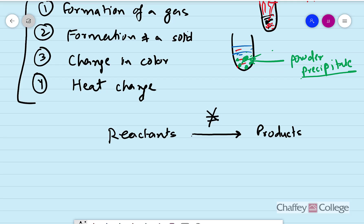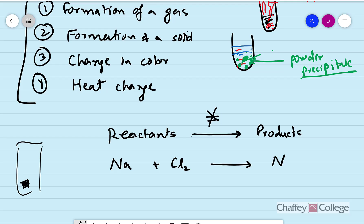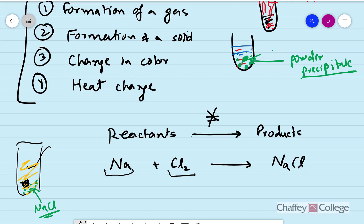For example, if we combine sodium metal with chlorine gas and let them mix, we will see a white powder form. Sodium is a shiny metal and chlorine is a yellowish gas. After a while you will see a white powder — that white powder is sodium chloride. So sodium chloride is our product and our reactants are sodium and chlorine gas. This is how we write a chemical equation.